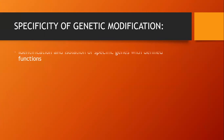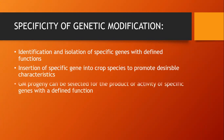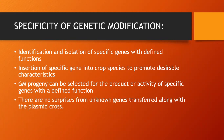Some specificities of genetic modification include identification and isolation of specific genes with defined functions, and insertion of specific genes into crop species to promote desirable characteristics like herbicidal resistance, immunity, and improved metabolism or allergy resistant genes. The genetically modified progeny can be selected for the product or activity of specific genes with a defined function. There are no surprises from unknown genes transferred along with the plasmid cross, as there is no evidence that unknown genes are transferred with the plasmid cross.